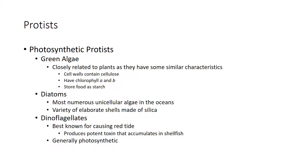Green algae are a really important food source for marine organisms, and there's actually a lot of algae used in our food. The cell walls contain cellulose, they have chlorophyll A and B, and they store their food as starch, just like plants do. Diatoms are the most numerous unicellular algae in the ocean, and they have these really crazy-looking shells made of silica.